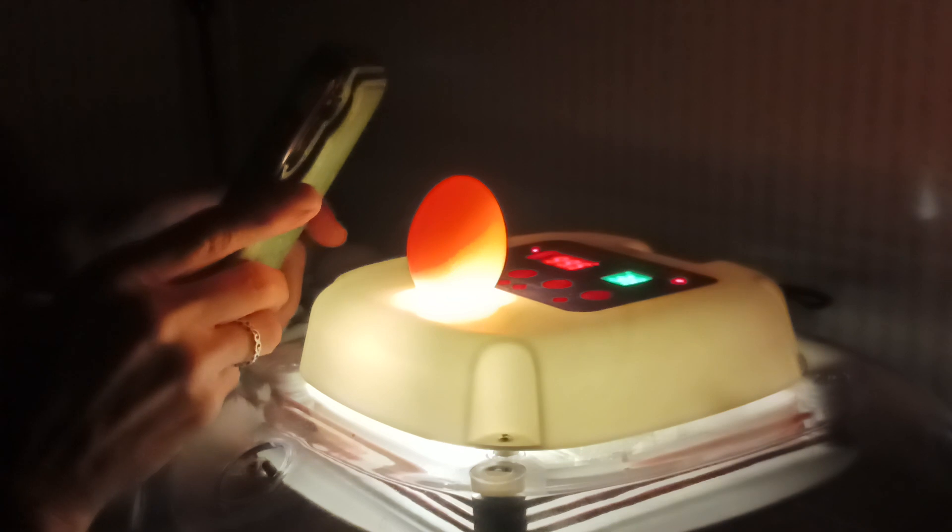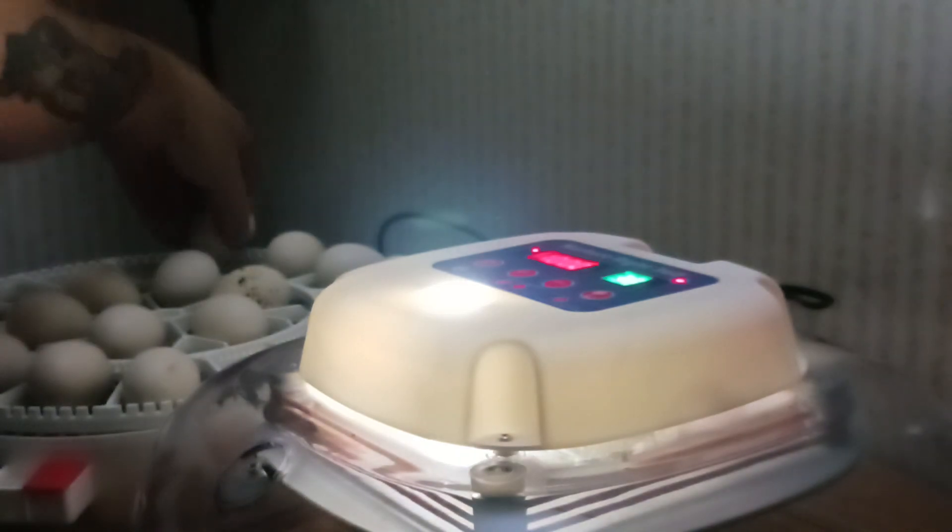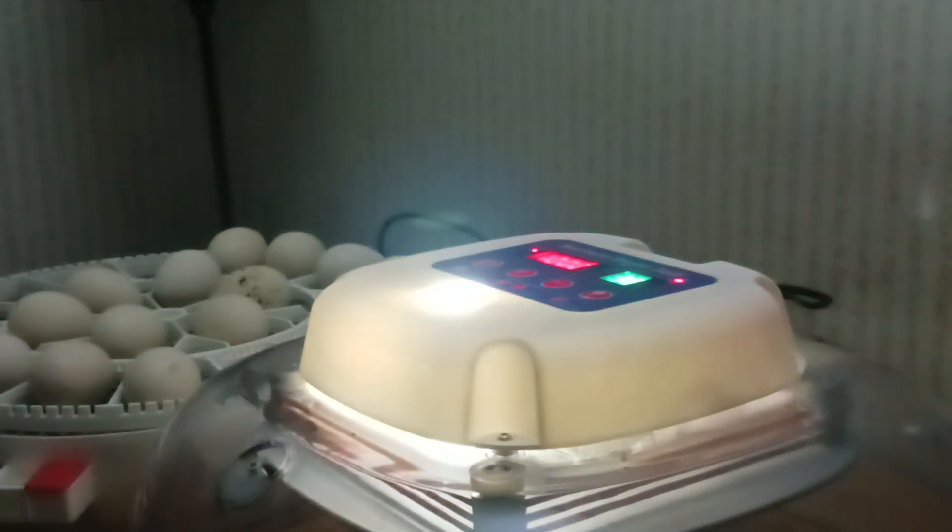Bebe is our frizzle bantam chicken. She's a Cochin frizzle, and if we get a frizzle rooster out of that with her markings and Hey Hey together, that's just going to be awesome. Hey Hey's a dutch bantam and Tory's a Cochin.